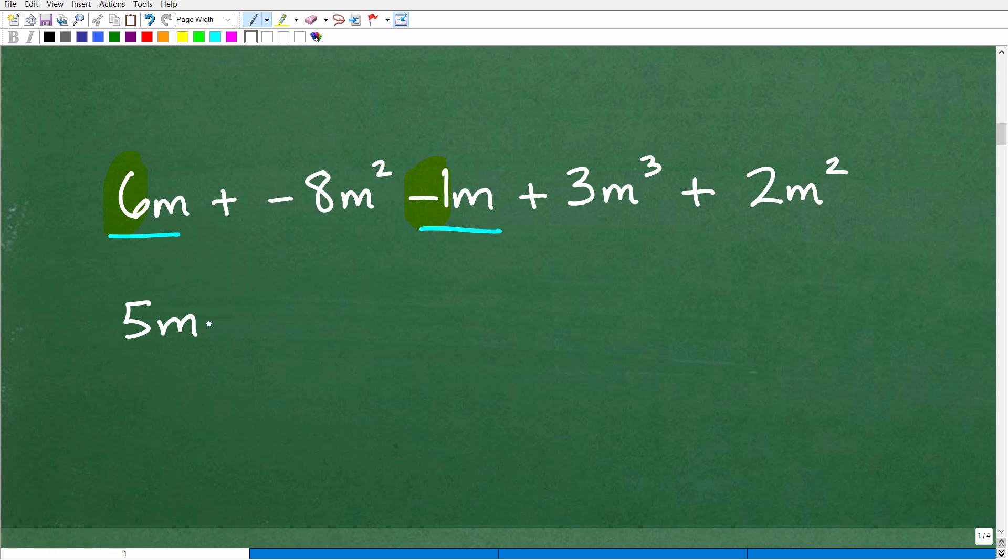Now, when you're working with a string of terms like this, a good thing to do once you're done combining your like terms is just draw one line, not a bunch of them. Don't do this because you need to be able to see what's going on. Just draw one nice, neat line through the terms that you combined. So we have 5M.